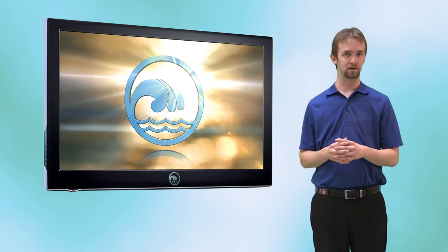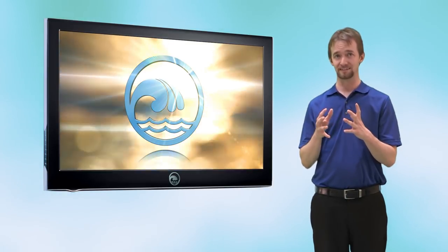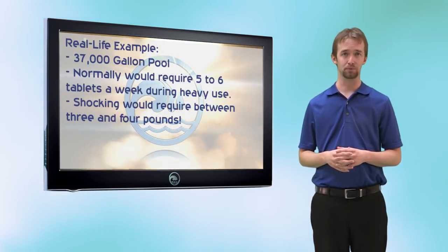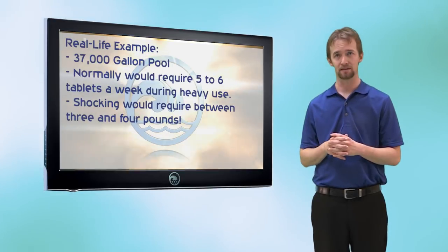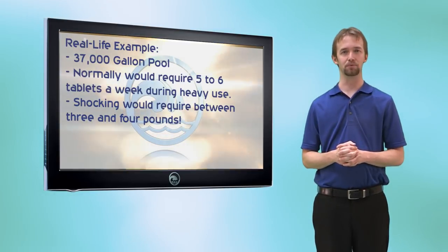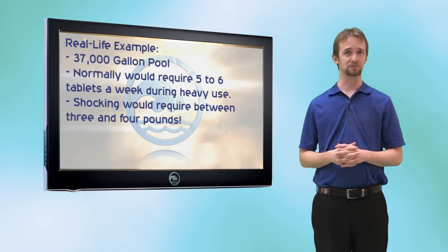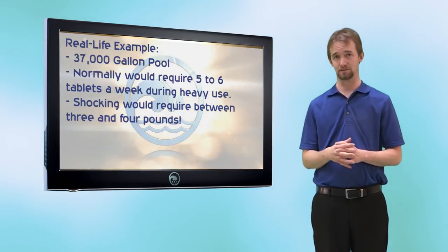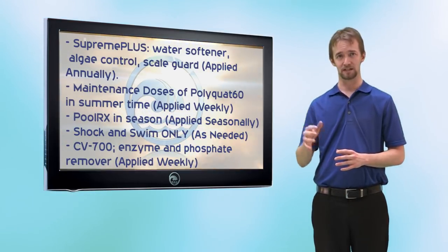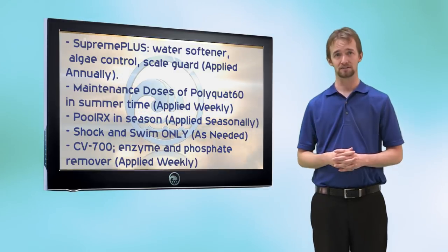If you really want a trouble-free pool, utilize as many alternatives to chlorine as you can. Let me give you a real-life example — a very large pool that utilizes all the alternatives to hold proper chlorine levels using an extremely low amount of chlorine. It's a 37,000-gallon pool. How many tablets per week in the summer during heavy usage? About five tablets per week. They use Supreme Plus to help stabilize pH and control algae, maintenance doses of PolyQuat 60, PoolRx, and CV700 as their enzyme and phosphate remover product.